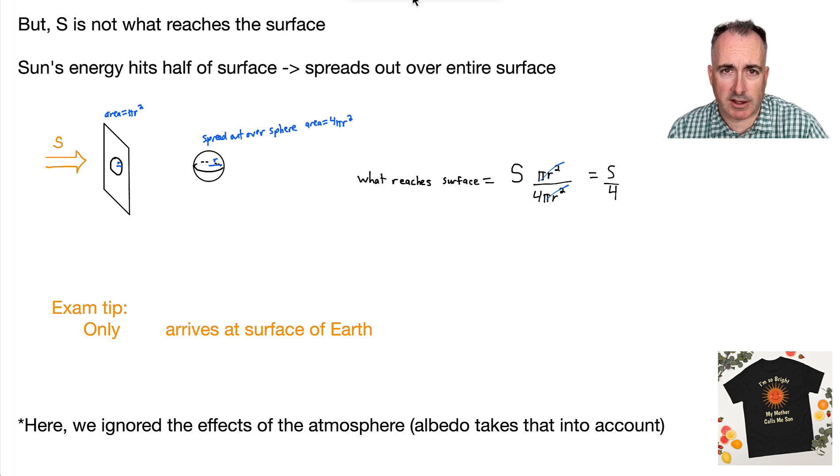So that means that the really important part, then, is that only S over 4 actually arrives at the surface of Earth. This is actually really important. So if you need to know, yes, although the solar constant is that number, 1,360 watts per meter squared, what actually reaches the surface of the Earth is only one-fourth of that.